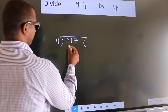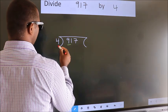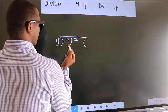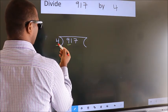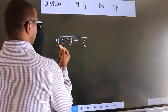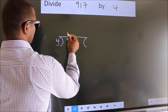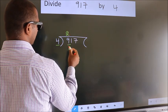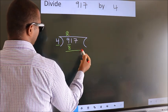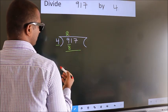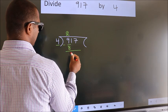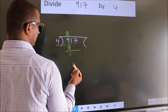Here we have 9, here 4. A number close to 9 in the 4 times table is 4 twos are 8. Now we should subtract, we get 1.